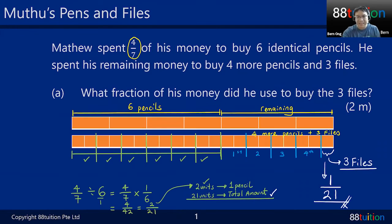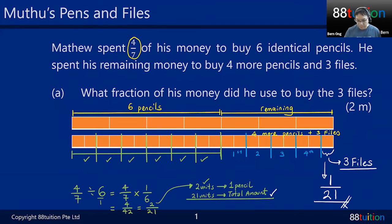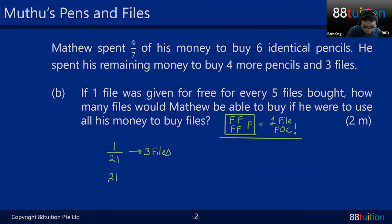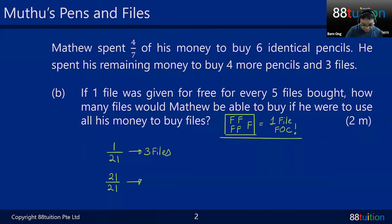Matthew wants to exchange all the pencils back to the shopkeeper and get files instead — earning the free file deal. How many files can Matthew buy if he uses all his money? From earlier: one out of 21 allows you to buy three files. So 21 out of 21 — the entire amount — gives you 21 times three, which is 63 files.